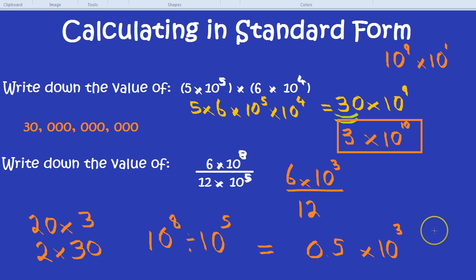Have we written our answer in standard form? Unfortunately not. Just like with 30 times 10 to the power of 9, 0.5 times 10 to the power of 3 is not standard form. This first number has to be between 1 and 10. 0.5 is not between 1 and 10. How do we get it to be between 1 and 10?